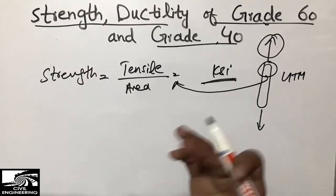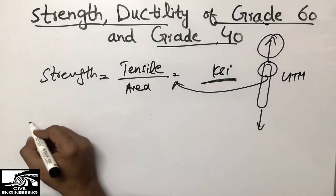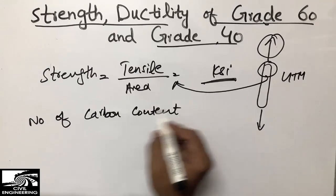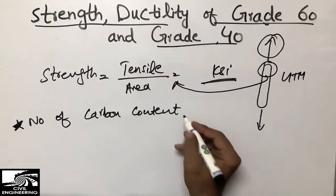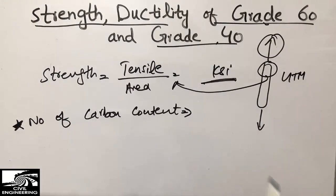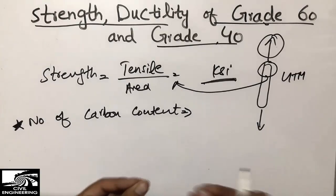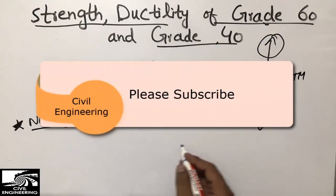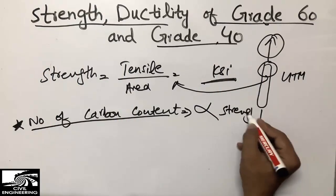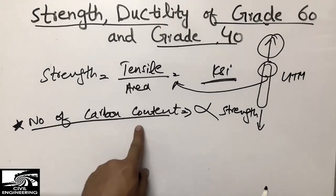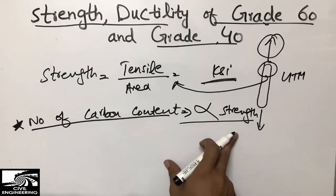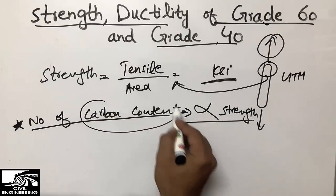Now, what determines higher strength? There is one main factor: carbon content. The number of carbon atoms in the steel is one of the most important factors in defining the strength of steel grades. More carbon content makes the steel bars have more strength. Carbon content is in direct relation with strength — if a manufacturing company uses more carbon content, the steel bars will have more strength.